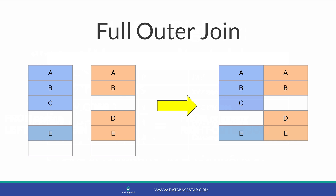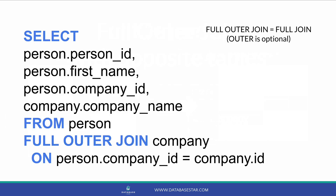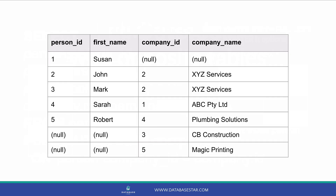Finally, a full outer join is a type of join that shows a combination of both a left and a right outer join. We can use either full join or full outer join, and the order of the tables does not matter. Here are the results: matching rows are shown, as well as rows in the person table without a matching company, and company rows without a matching person. You may not use this type of join very often, but it's good to know it exists.